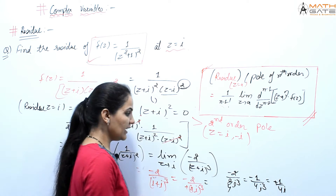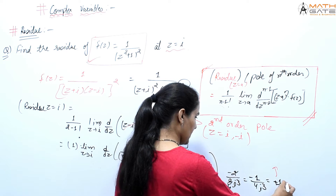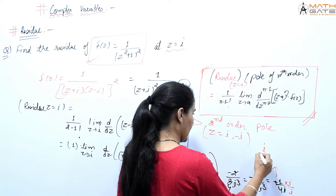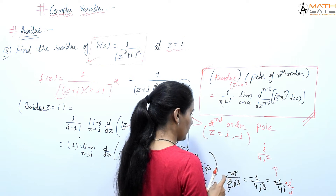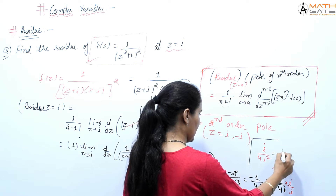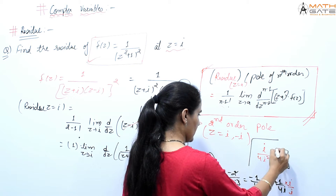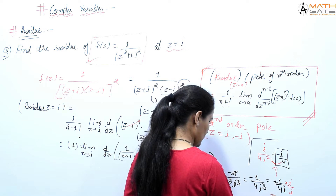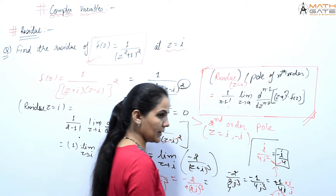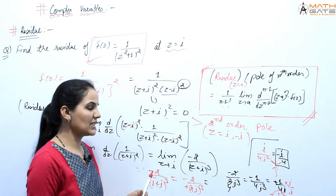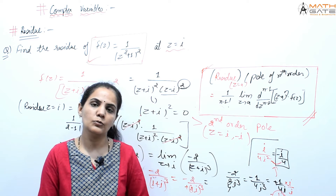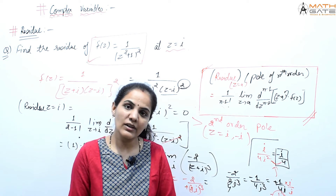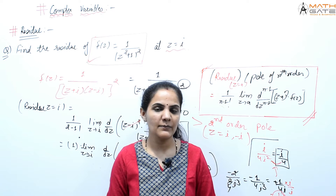To simplify 1/(4i) further, multiply numerator and denominator by i: i/(4i²) = i/(−4) = −i/4. So the residue at z = i can be written as either 1/(4i) or −i/4. The residue is the coefficient of (z−a)^(−1) in the Laurent expansion, and this is the formula for it.